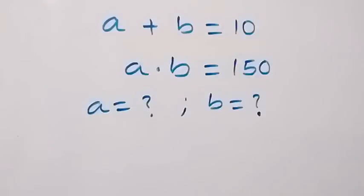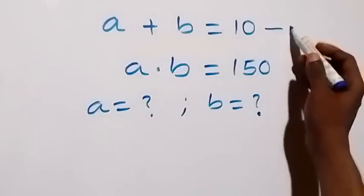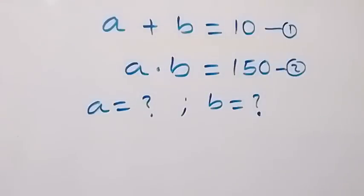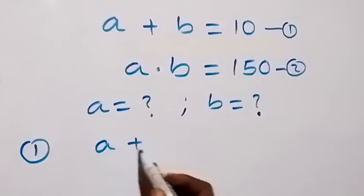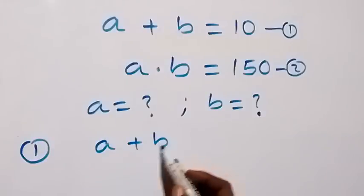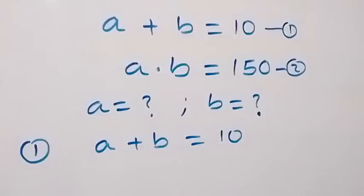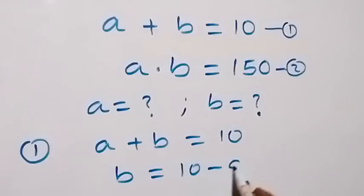Hello, you are welcome to solve for A and B in this nice system of equations. Let this be equation 1 and this be equation 2. From equation 1, which is A plus B equals 10, let's take A to the other side and we have B equals 10 minus A.